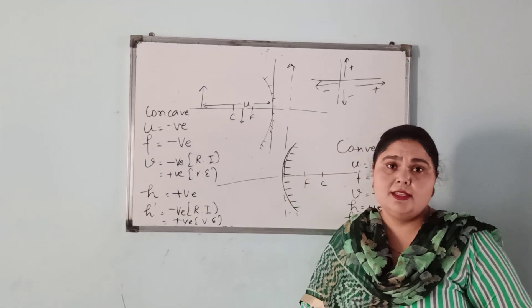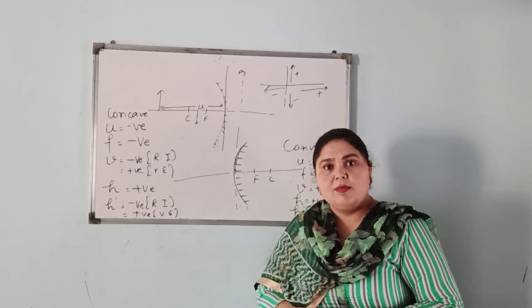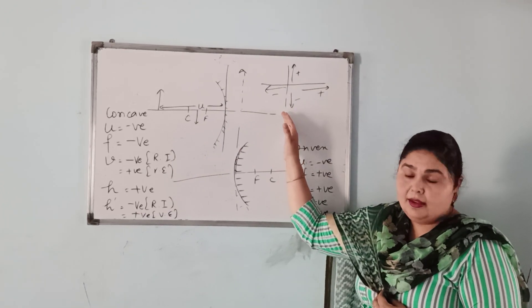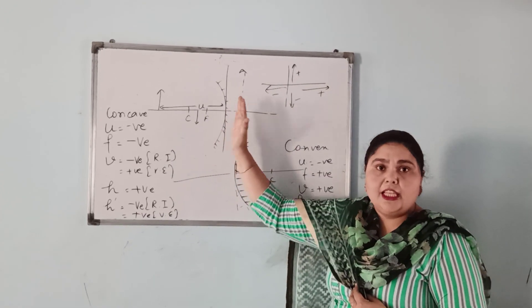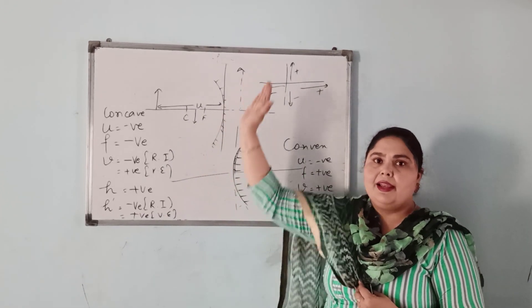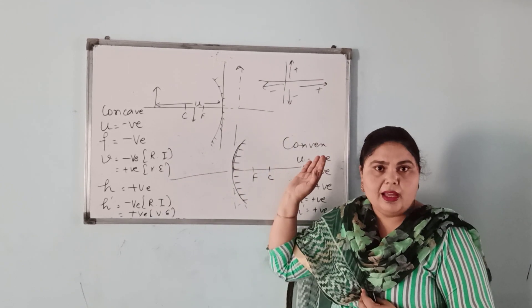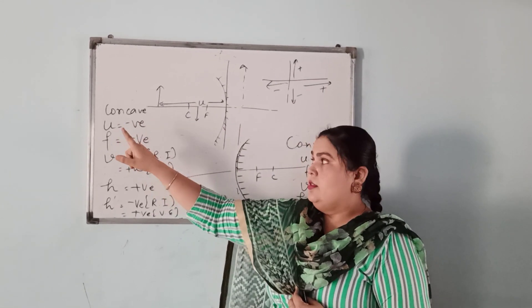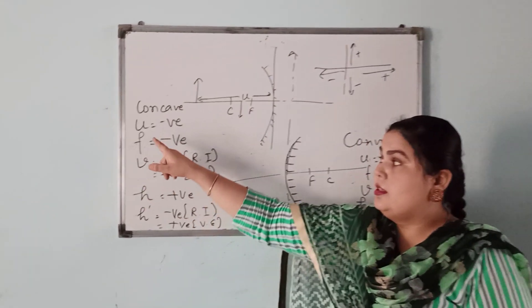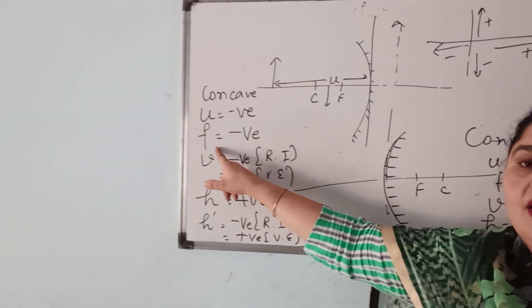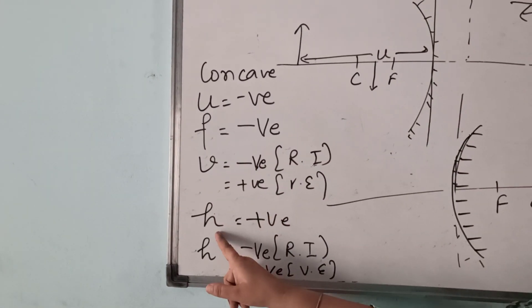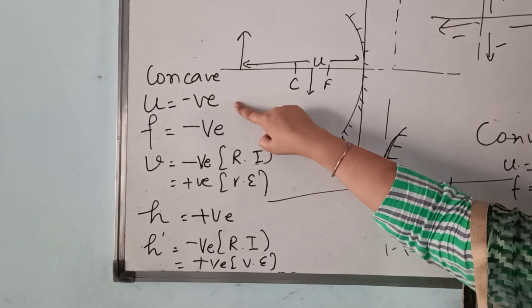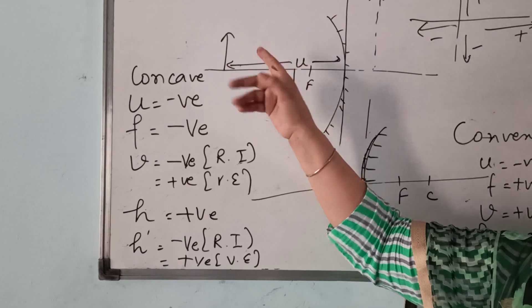We have to apply sign conventions according to the rectangular coordinate system. To summarize: U is object distance, V is image distance, F is focal length, h is object height, and h-dash is image height. U is always negative because the object is always on the left side.